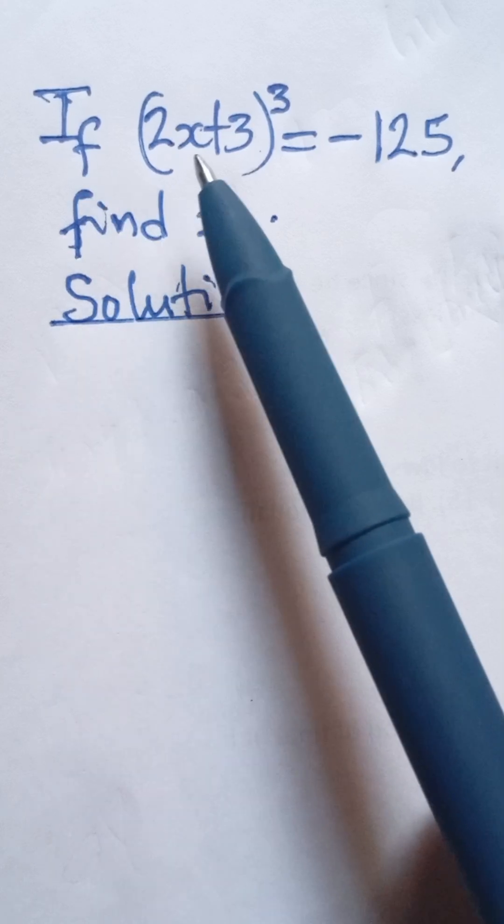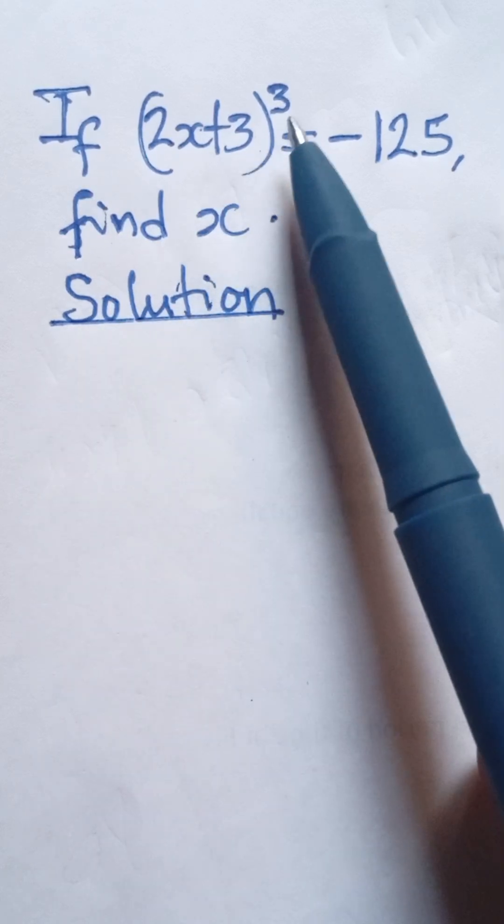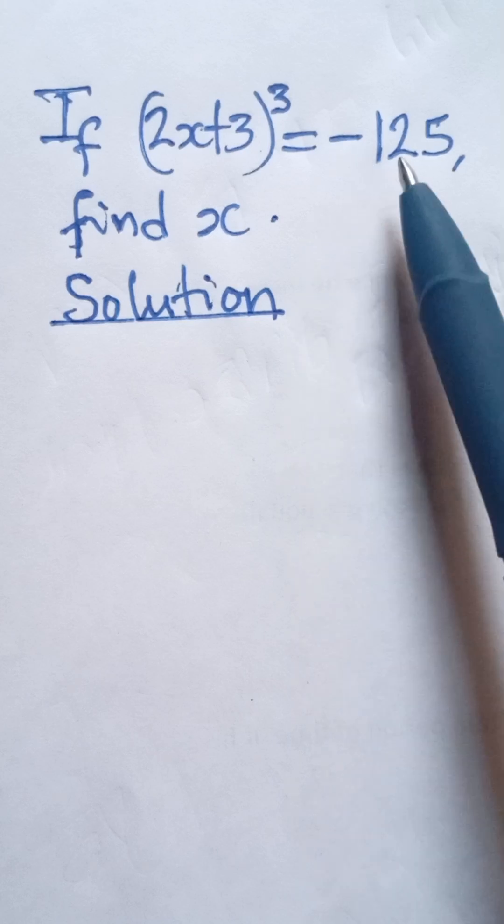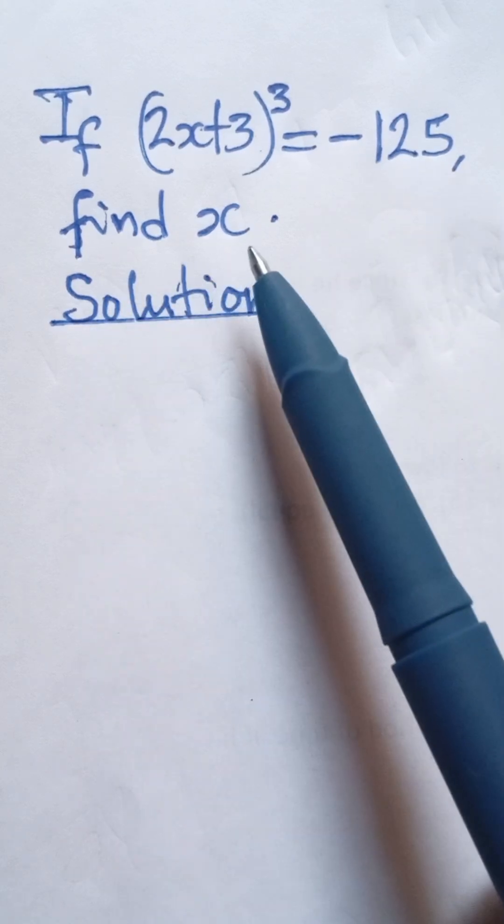So, if 2x plus 3 all raised to the power 3 is equal to negative 125, find x.